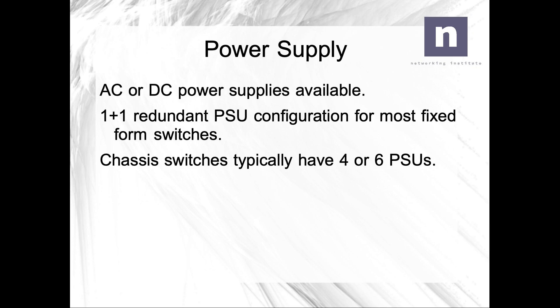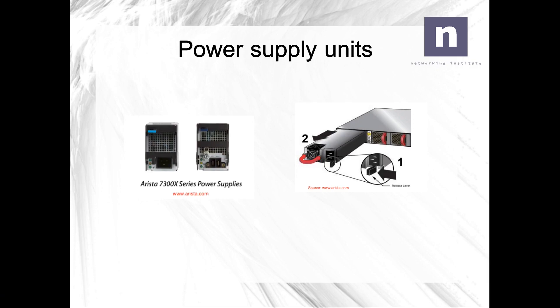In terms of power supply, you can have AC or DC power supply in a 1+1 redundant PSU configuration for most fixed form factor switches. Chassis switches can have up to 4 or 6 PSUs. Here is what a PSU looks like for a 7300X chassis switch, and on the right-hand side you can see what the PSU looks like for a fixed form factor switch, showing how the PSU can be replaced.